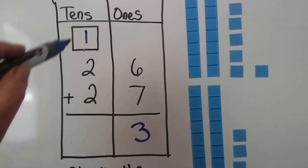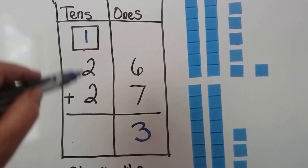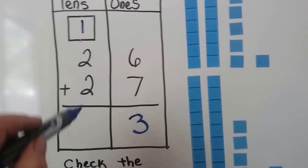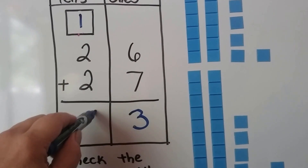Now we add the tens: 1, 2, 3, 4, 5. We get 53.